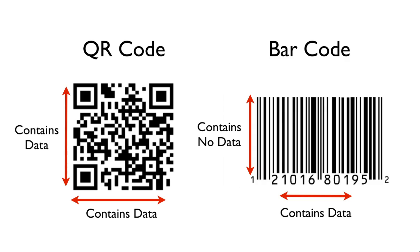As most of you know, QR code stands for quick response code, and it's a two-dimensional barcode that holds a good deal more information than a traditional barcode. They originated in Japan at the Toyota factory to track the manufacturing of car parts. Since then, they've taken off in popularity, and you'll see them everywhere in consumer advertising.